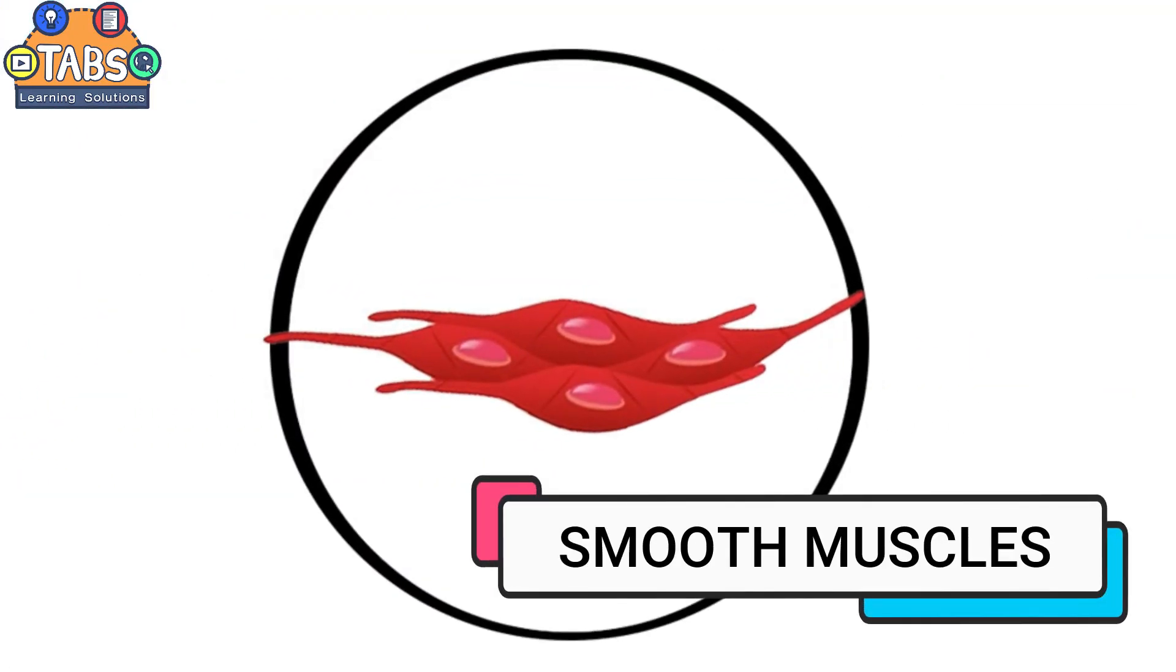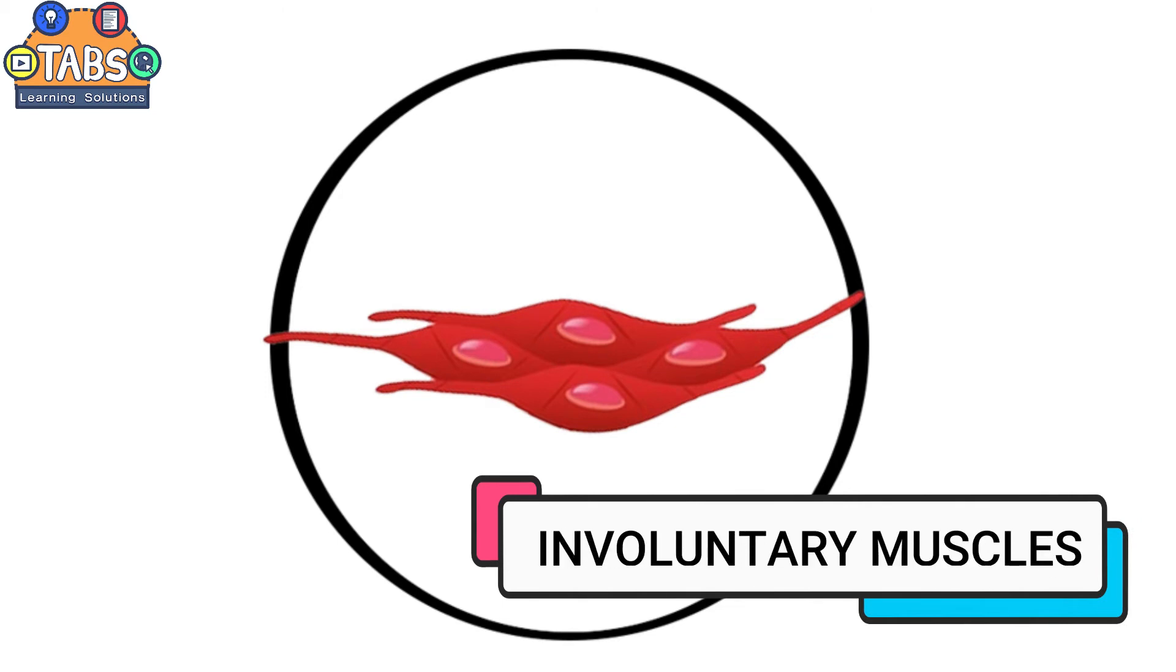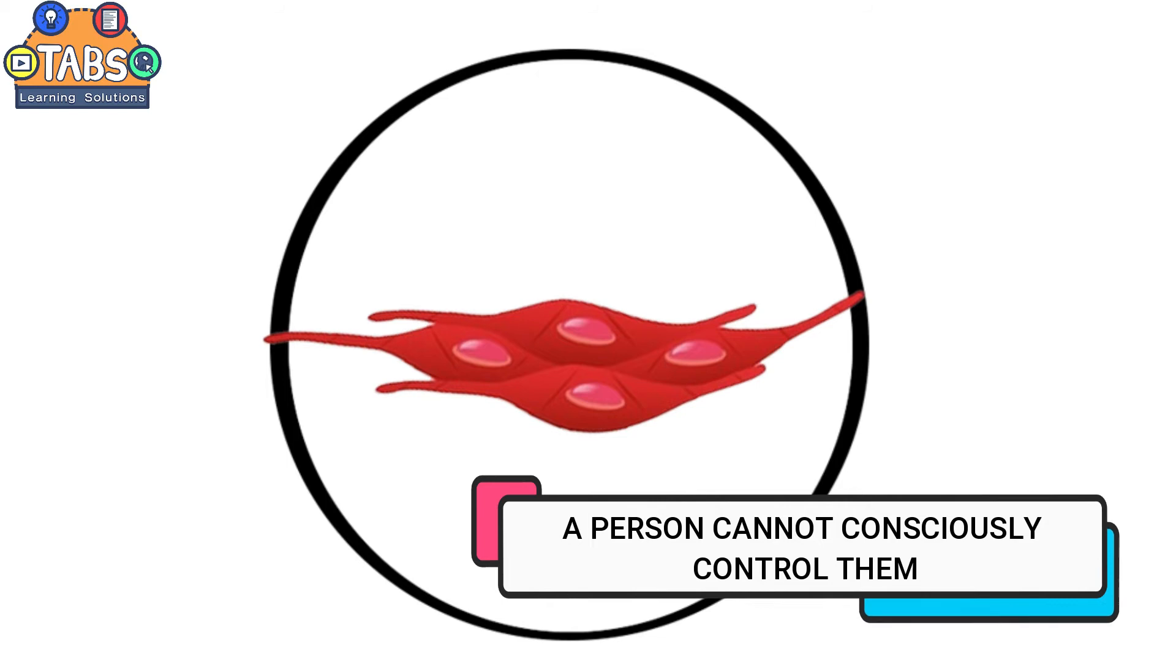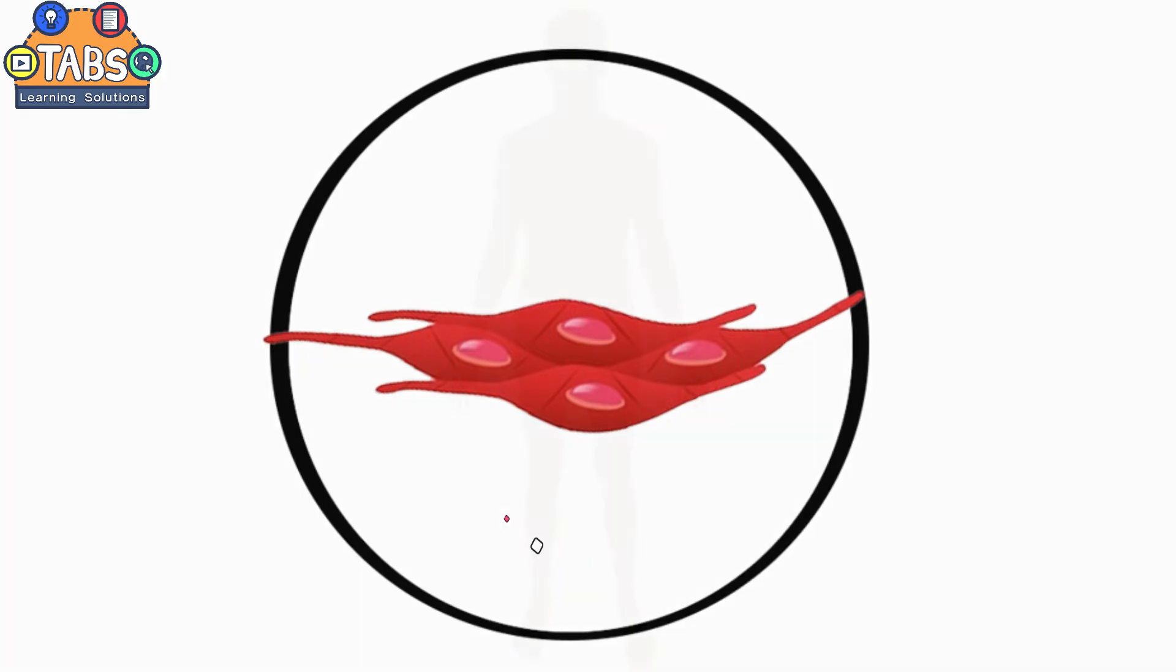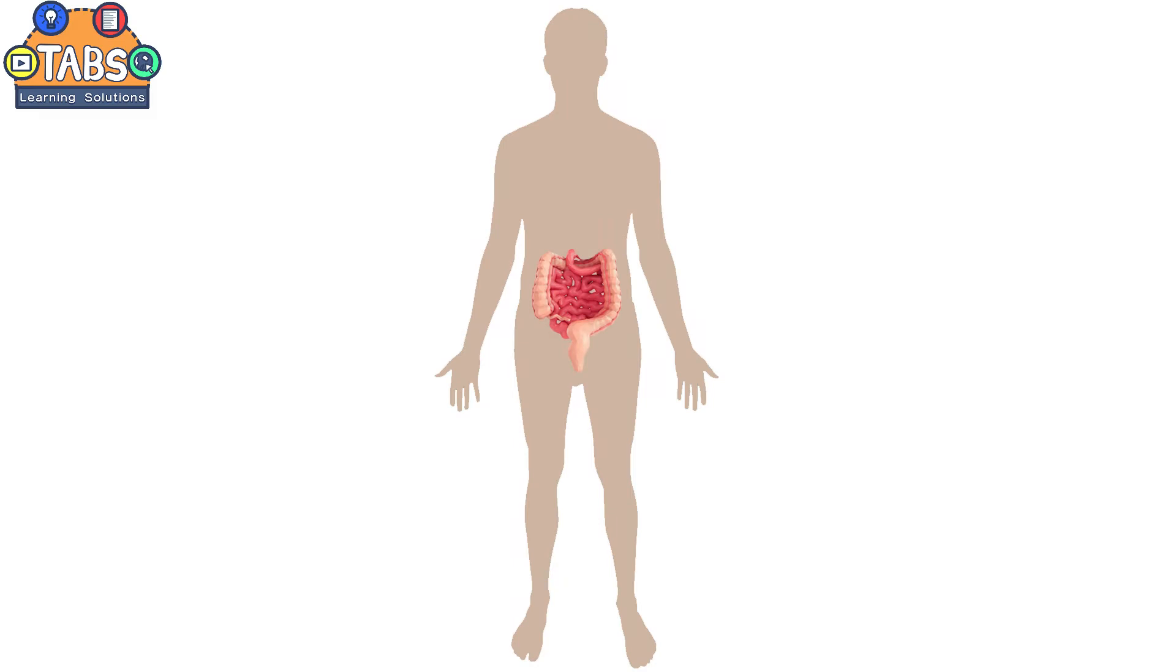The smooth muscles are called involuntary muscles because a person cannot consciously control them. They are found inside of organs like the stomach, intestines, and blood vessels.